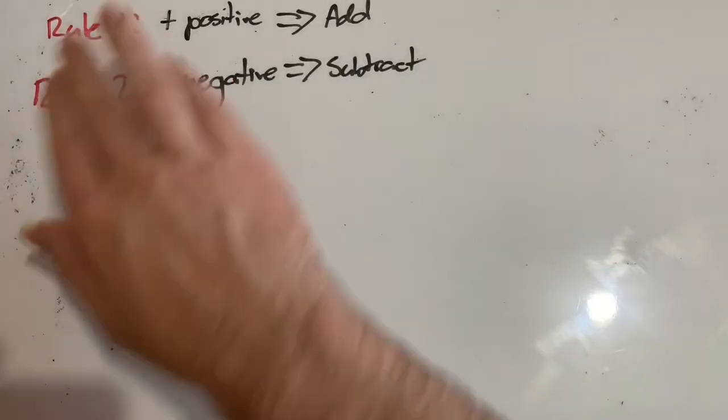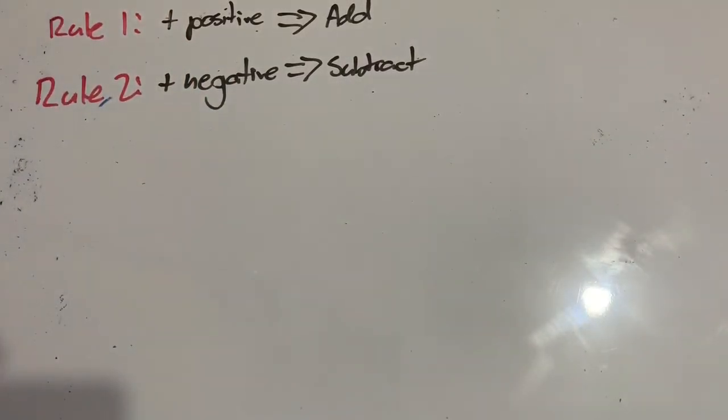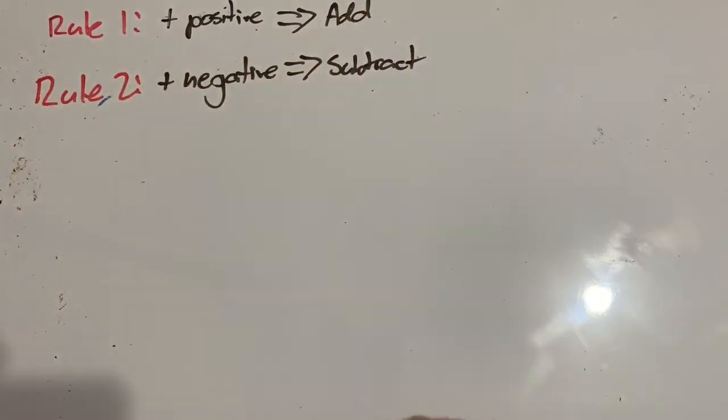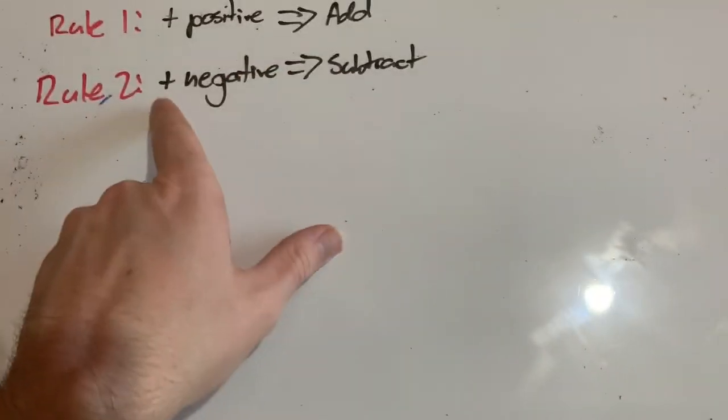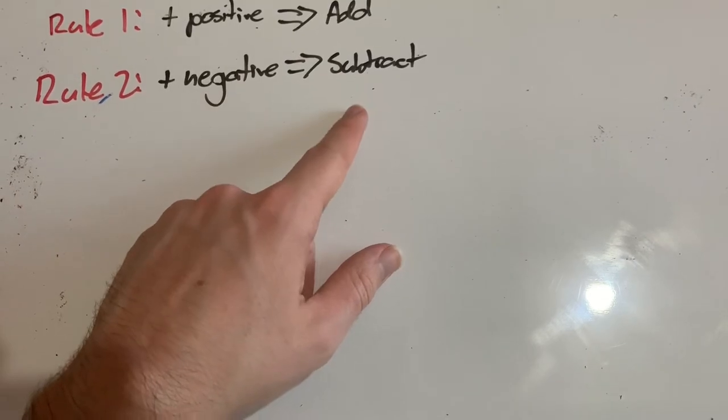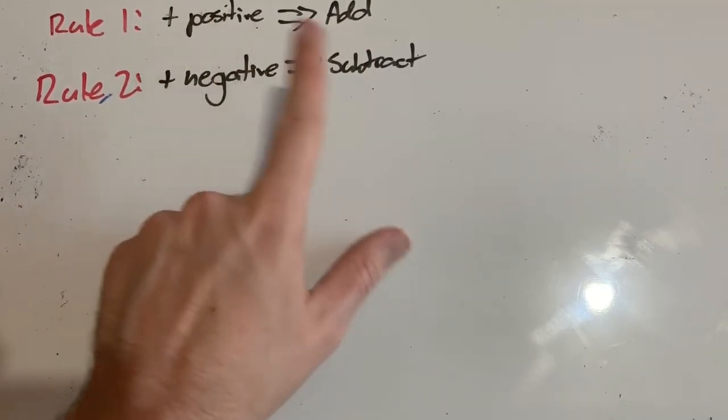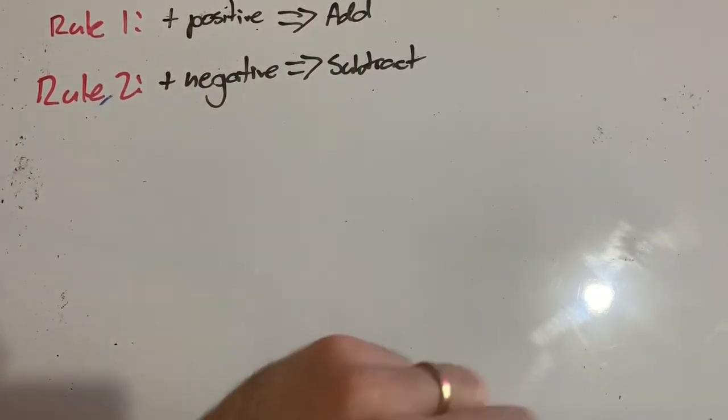So just to remind us of our rules, our first rule is that if we add a positive number, we actually add it, that's just regular addition. And if we add a negative number, we're actually subtracting it. Let's put these two rules into application.